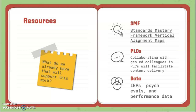For resources, your grade level PLCs are so important to your planning because working with your gen ed colleagues will show you how to appropriately cover grade level standards and push the rigor for your students. The Standards Mastery Framework — especially the vertical alignment maps — will help you close the gaps for your kids. You can look at the year prior or a couple years prior to see how priority standards align and what gaps to close. Also, data in your students' IEPs, progress reports, psych evaluations, and common formative assessments will help you plan for unique learners' needs.